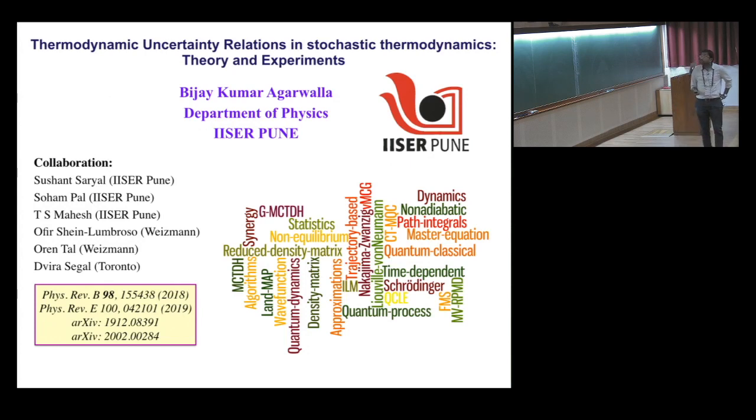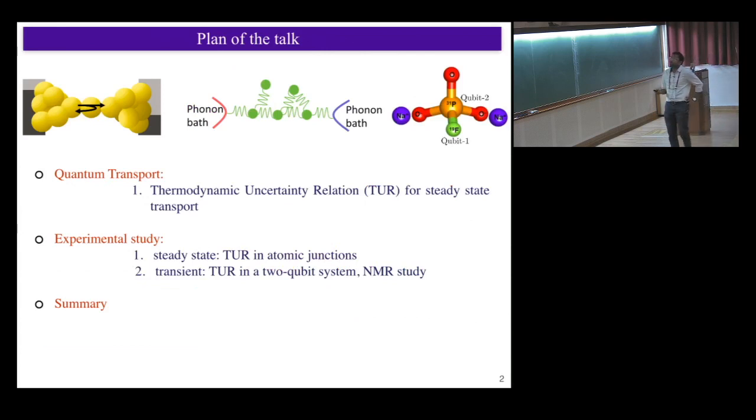So let me very briefly tell you the plan. I'm going to talk about this TUR, the uncertainty relation. First I'll tell you what's this relation in the steady state, then I'll show you two experimental results - one in steady state and another in transient situation. And then I'll try to summarize.